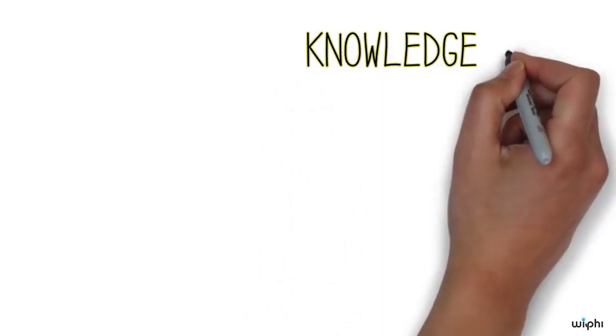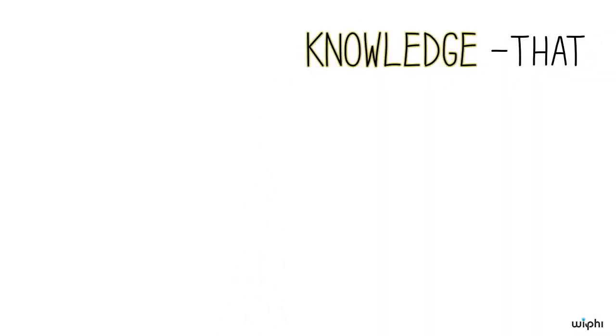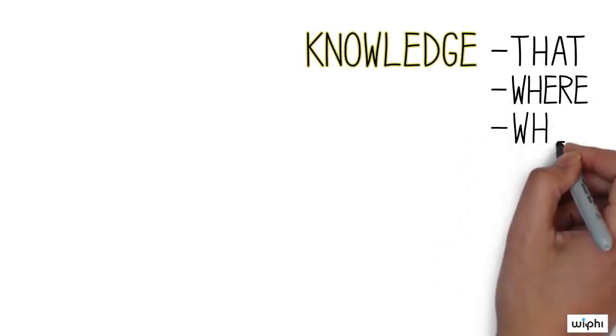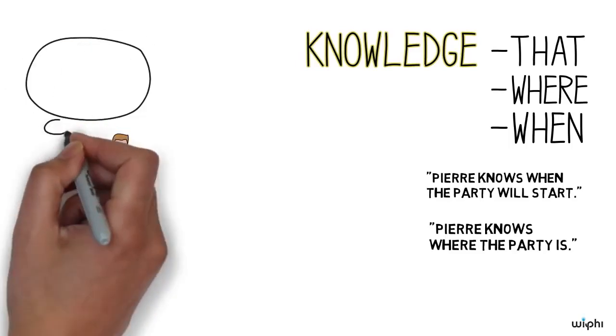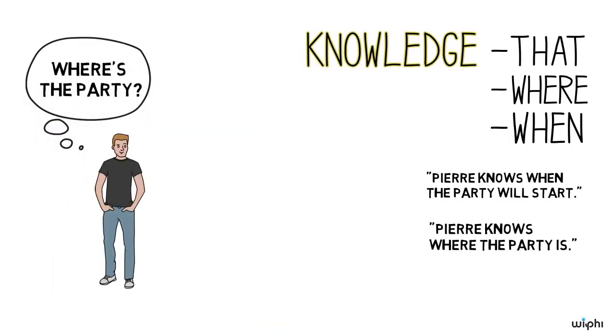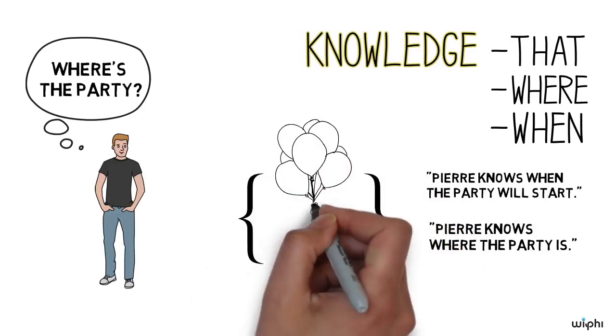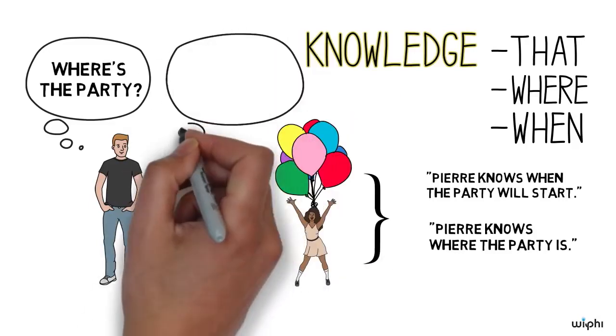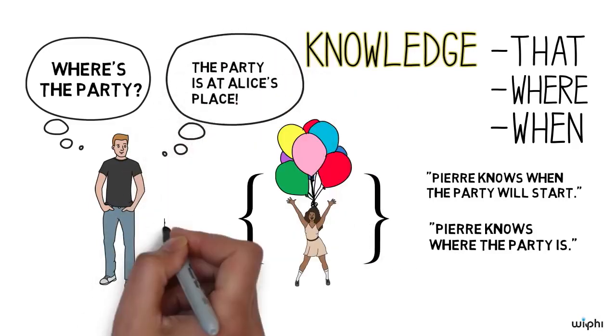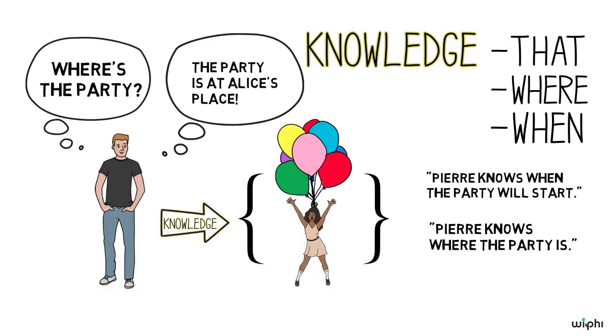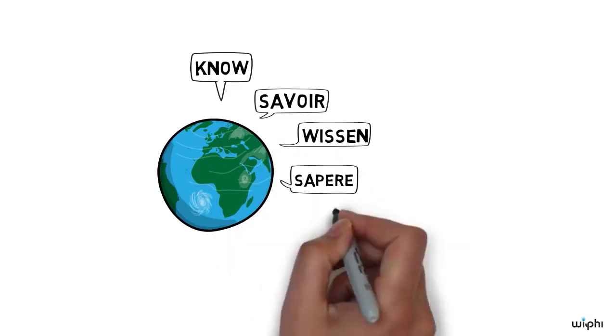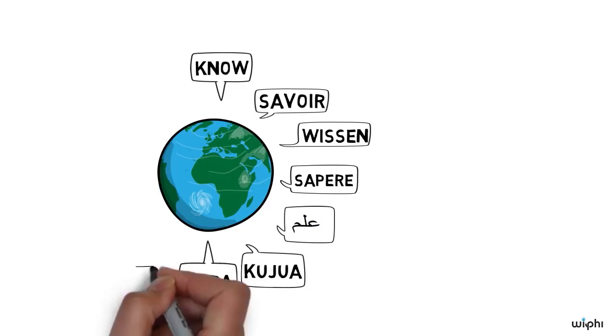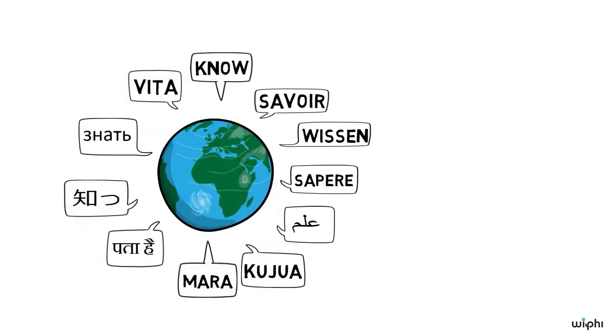Sometimes this is called knowledge that. But actually, along with that, you can use question words like where or when. Pierre knows when the party will start. Or, Pierre knows where the party is. Knowing where the party is means knowing the answer to the question, where's the party? And that's going to be a fact, like the fact that the party is at Alice's place. Knowledge is a way of being latched onto a fact. It is thought that every language in the world has a word that works to translate this fact-grabbing sense of the verb to know. And this kind of global popularity is very rare. Only about a hundred words are thought to be universal in this way.